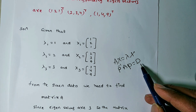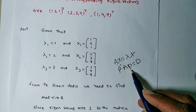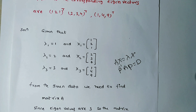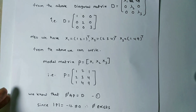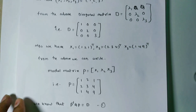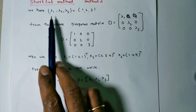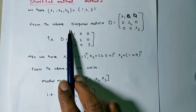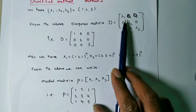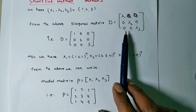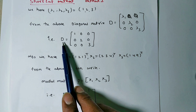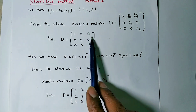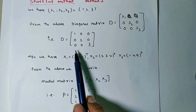Writing down the given values: λ1 = 1, λ2 = 2, λ3 = 3. From these, the diagonal matrix D is: [1, 0, 0; 0, 2, 0; 0, 0, 3]. Also, x1 = [1, 2, 1] transpose, x2 = [2, 3, 4] transpose, x3 = [1, 4, 9] transpose.